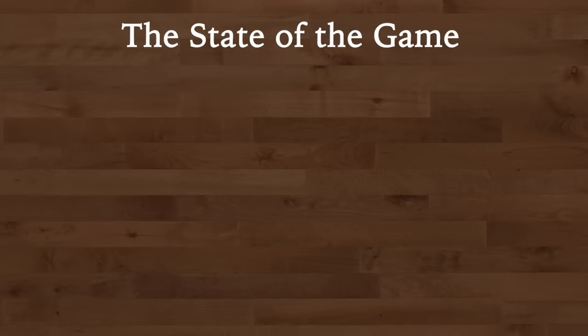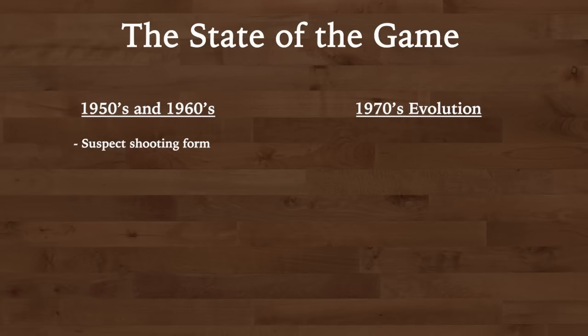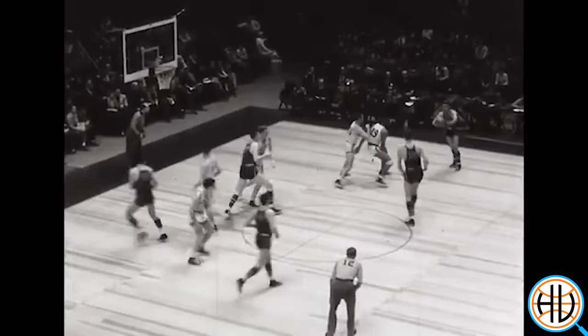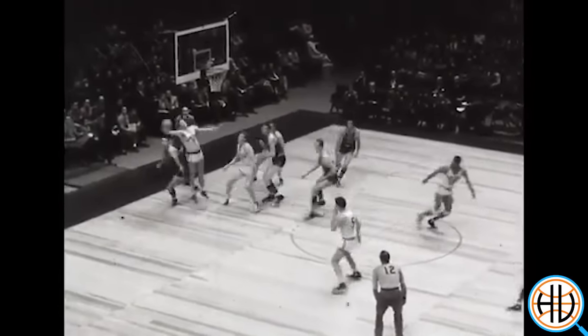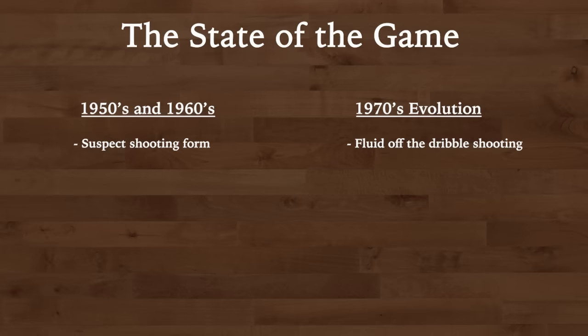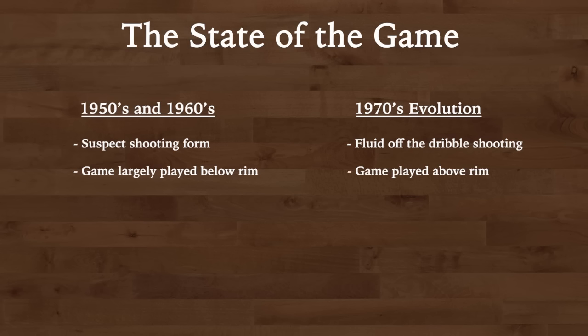Let's recap the state of the game so far. Jump shooting form was pretty ugly in the 50s, but by the 70s we're starting to see more modern shooting — guards now taking smooth off-the-dribble jumpers on balance and off of two feet. It might not be Steph Curry, but it's a big improvement. There was also little to no dunking in the 50s and 60s — just one Bill Russell put-back dunk — but that's now changed in the 70s. On one of the first plays of the game, Bill Walton rolled to the basket and dunked on Dr. J.